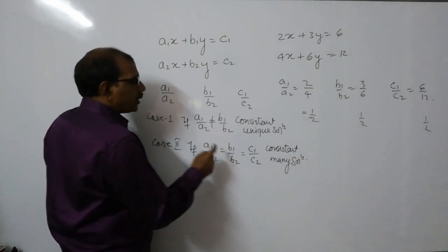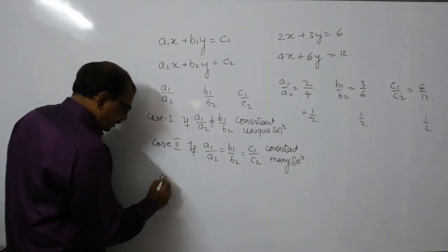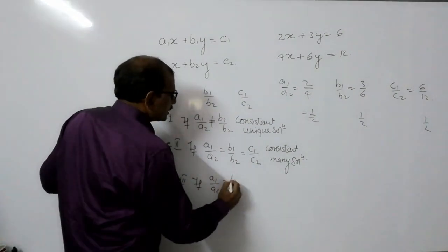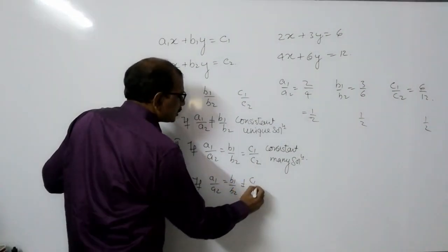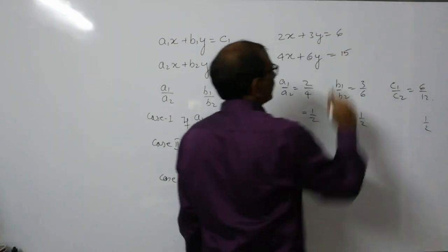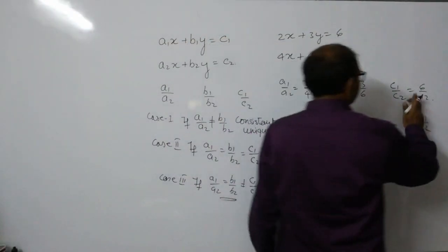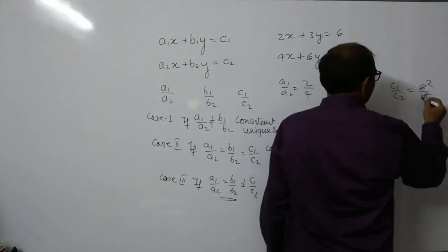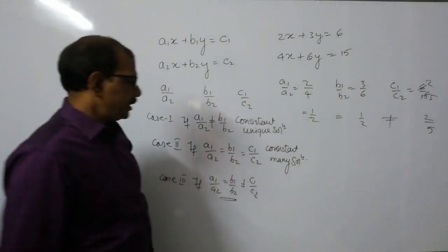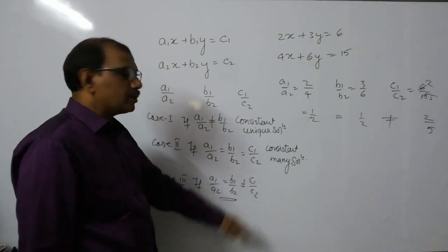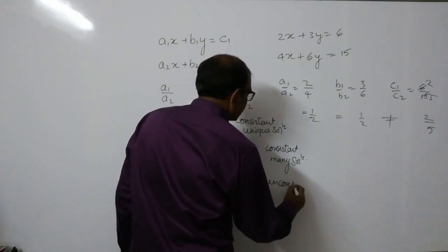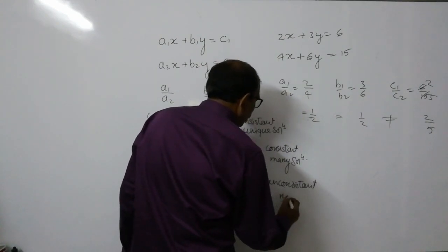Case 3: if a1/a2 equals b1/b2 but is not equal to c1/c2, then the equations are inconsistent and have no solution. For example, if the constant in the second equation is changed to 15 instead of 12, then c1/c2 equals 6/15 equals 2/5, which is not equal to 1/2 — so the equations are inconsistent with no solution.